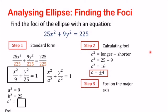So in step 3, foci on the major axis. Ilalagay natin yung foci sa major axis. Paano natin ina-identify yung major axis? Yung major axis natin kung saan ang mas mataas na value, doon yung major axis. For example, sa 9 and 25, napansin ninyo, 25 is greater than 9. So B is greater than A, that means ang major axis natin is along the y-axis. So yung foci natin, ilalagay natin along the y-axis. If it is along the y-axis, 0 automatic yung ating x, and yung y naman natin ay 4. So ang foci natin ay 0, 4 and 0, negative 4.